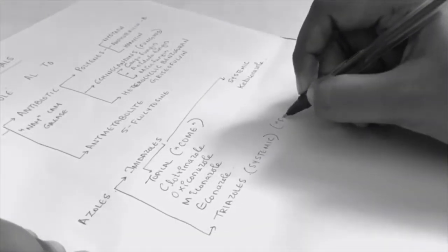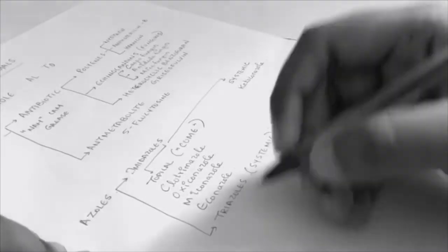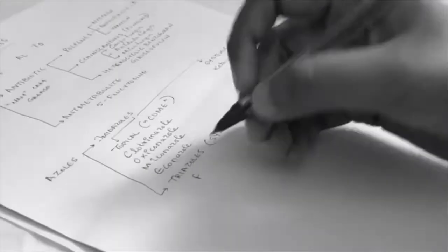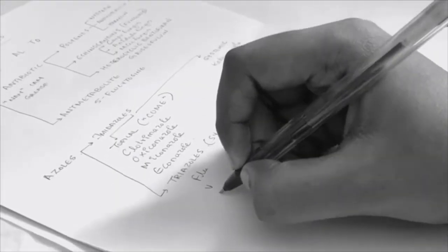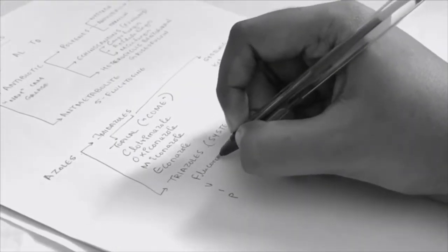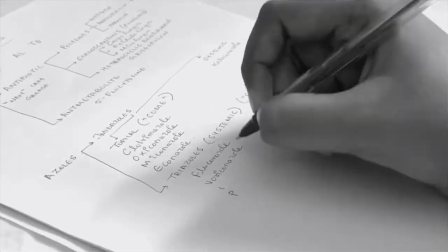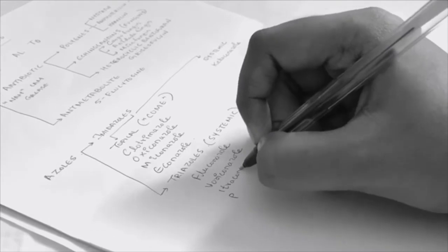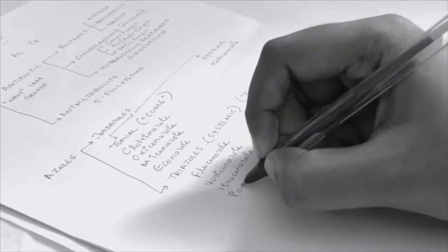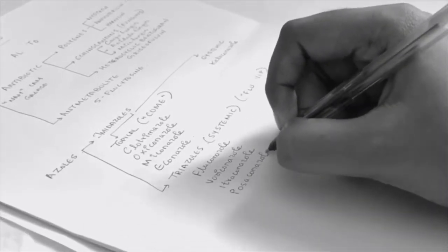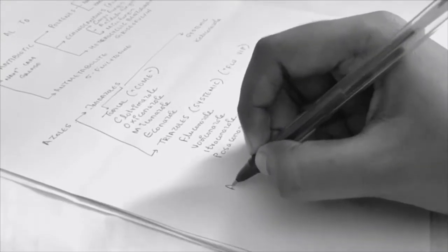Then for systemic triazoles, the mnemonic is FLU-VIP. That is, some VIP has got a flu. So we say FLU-VIP. Fluconazole, voriconazole, itraconazole, and posaconazole.